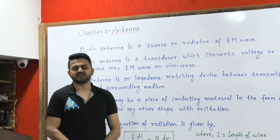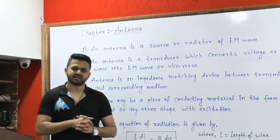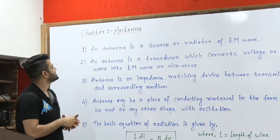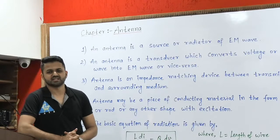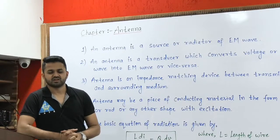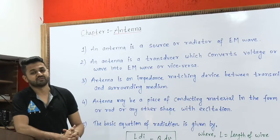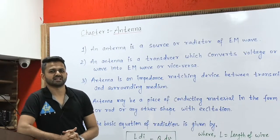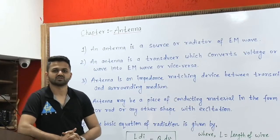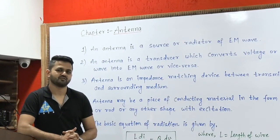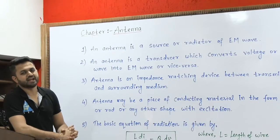The antenna chapter starts from some basics — the introduction of the antenna. The first point is: an antenna is a source or a radiator of electromagnetic waves. When we generate an electromagnetic wave, or when we transmit some signal through a transmission line into free space, we require an electromagnetic wave. The system required to transmit the electromagnetic wave is the antenna.